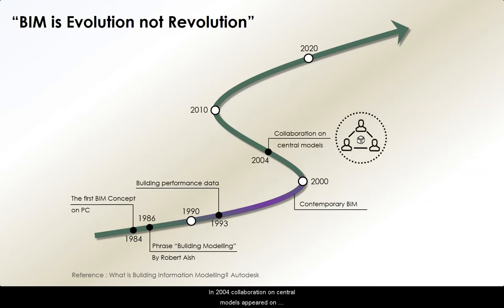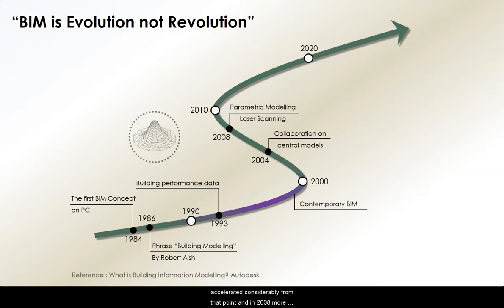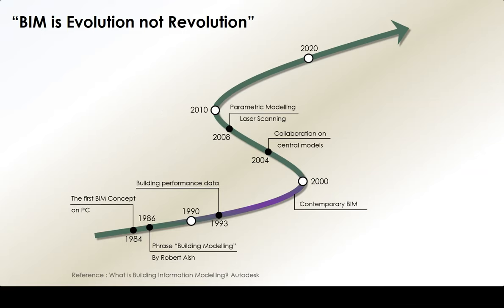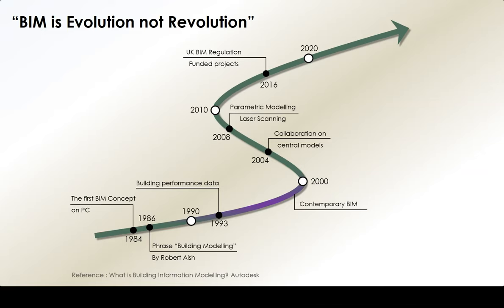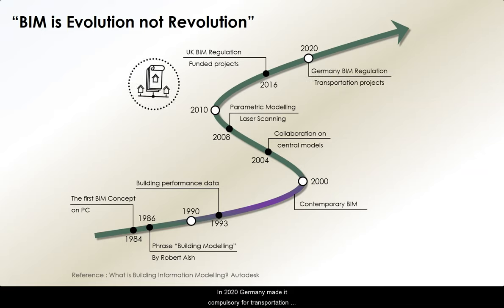In 2004, collaboration on central models appeared on BIM applications. The advancements of BIM accelerated considerably from that point, and in 2008 more cutting-edge technologies such as parametric modeling and laser scanning were incorporated into BIM applications. After 2015, different governments made amendments to existing construction regulations to improve the incorporation of BIM processes. For example, in 2016 use of BIM in funded projects became mandatory in the UK, and in 2020 Germany made it compulsory for transportation projects.